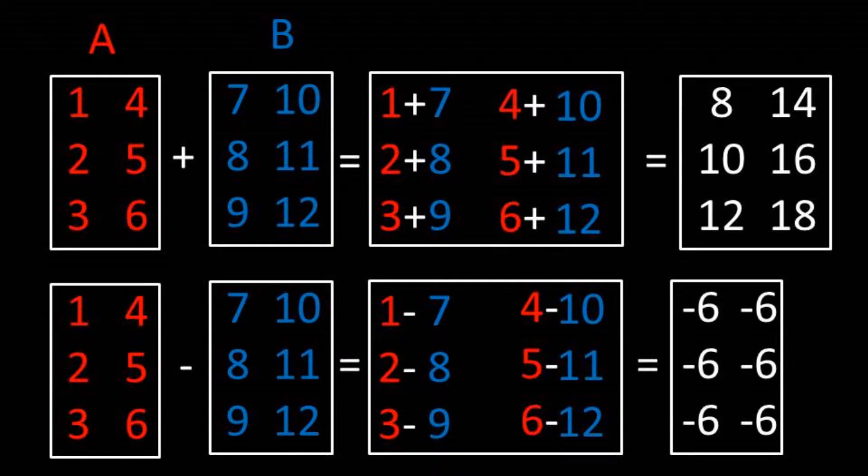For example, we take the number that is in column 1 and row 1 in A and add it to the number that is in column 1 and row 1 in B and add the two together. So in this case, we have 1 plus 7 equals 8.